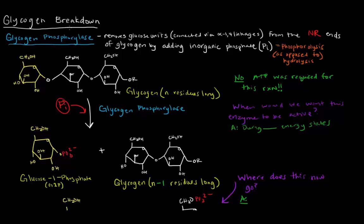The way it breaks down glycogen is it removes a single glucose unit at a time that's connected via an alpha-1,4 linkage, and it removes it from the non-reducing ends of glycogen by adding an inorganic phosphate. So that's where the phosphorylase portion comes in. This process is called phosphorolysis. We're going to add a phosphate group to break a bond.